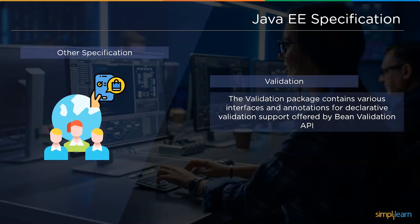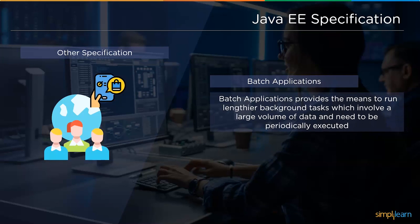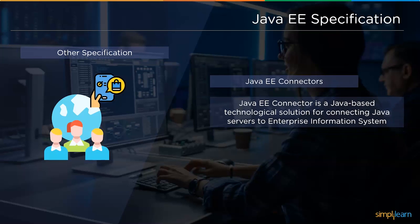Finally, we enter the miscellaneous specifications of Java Enterprise Edition. The first is Validation: the validation package consists of various interfaces and annotations for declarative validation support offered by the Bean Validation API. Next, Batch Applications provide the means to run long-running background tasks involving large volumes of data that need to be periodically executed. Finally, the Java Enterprise Connector Architecture is a Java-based technological solution for connecting Java services to enterprise information systems.